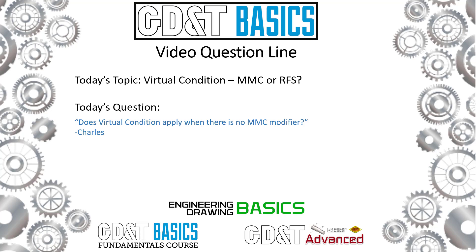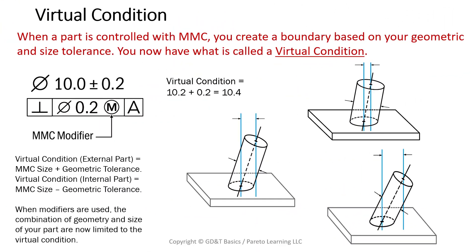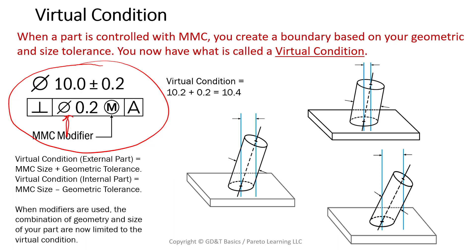Out of the standard it states: when a part is controlled with MMC, you create a boundary based on your geometric and size tolerances — you now have what is called a virtual condition. Here we have a size and feature control frame pulled from a course drawing. We have a size of 10 millimeters plus or minus 0.2, and a perpendicularity callout. We're controlling a cylinder — it is a boss — so the diameter symbol is present. The tolerance is 0.2 at maximum material condition, referenced to datum A.